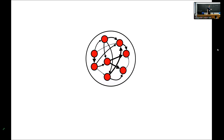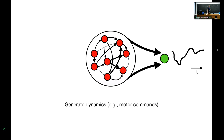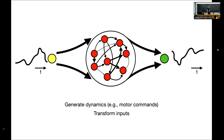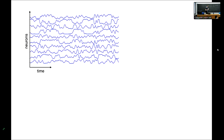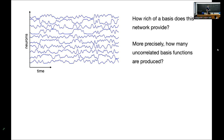It's useful to think about what neural networks in our brains actually do. They're used for some downstream purpose, and these purposes all involve reading out information from a collection of neurons. One purpose might be to generate dynamics — for example, producing motor commands by reading out a low-dimensional projection to generate dynamic motor commands. You could also have some input, transforming a temporal input to produce outputs. Or you could be interested in having this brain region communicate to other brain regions.